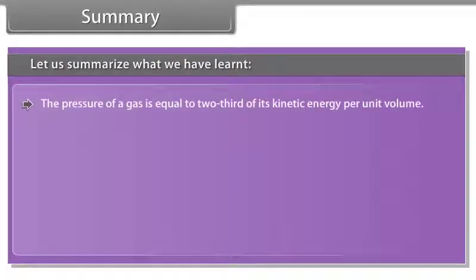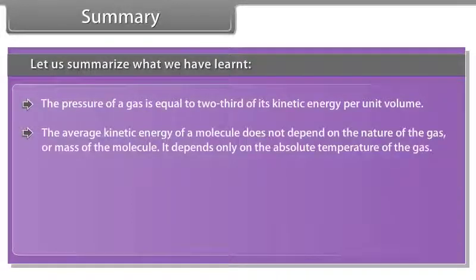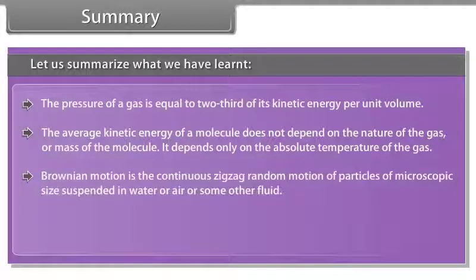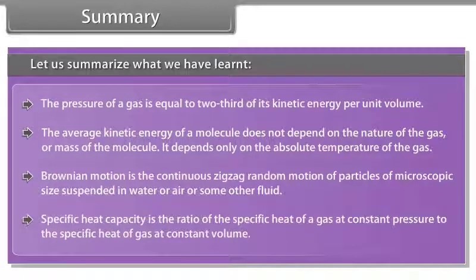The pressure of a gas is equal to two thirds of its kinetic energy per unit volume. The average kinetic energy of a molecule does not depend on the nature of the gas or mass of the molecule. It depends only on the absolute temperature of the gas. Brownian motion is the continuous zigzag random motion of particles of microscopic size suspended in water or air or some other fluid. Specific heat capacity is the ratio of the specific heat of gas at constant pressure to the specific heat of gas at constant volume.